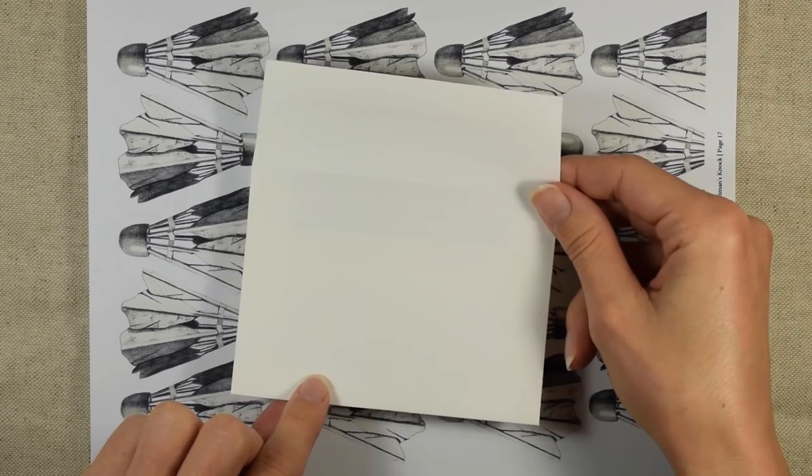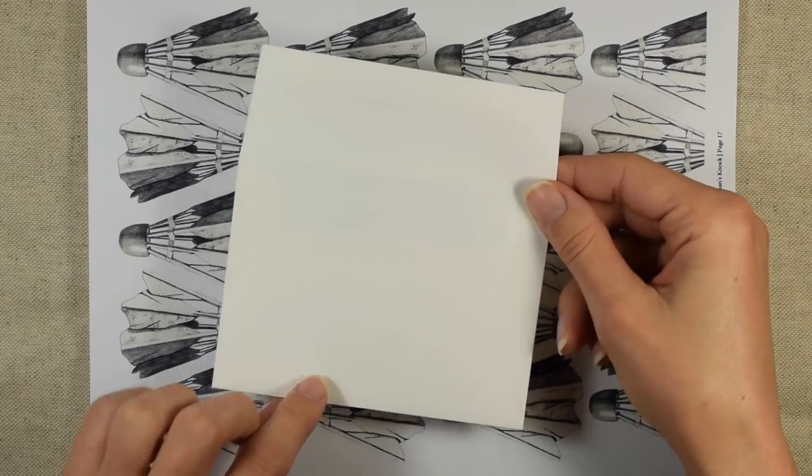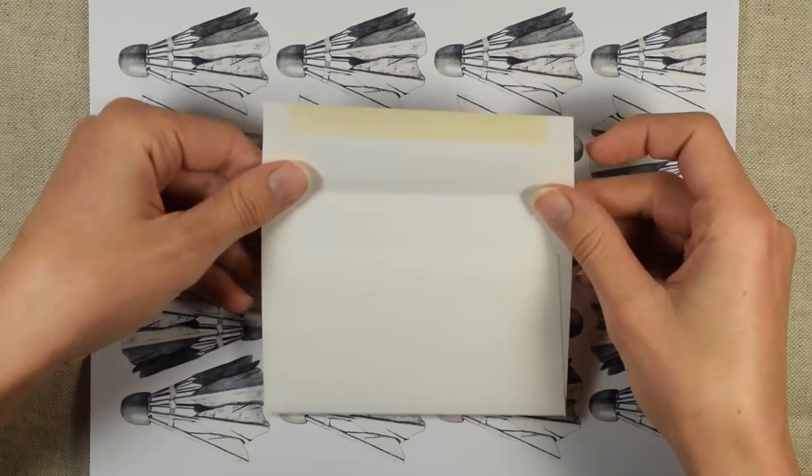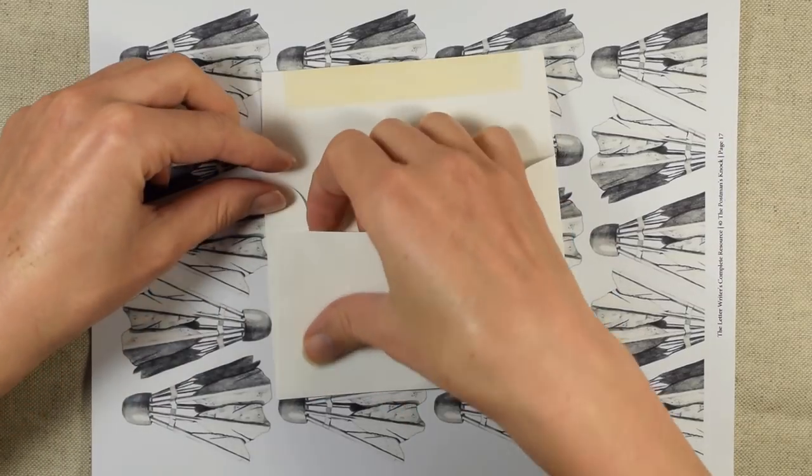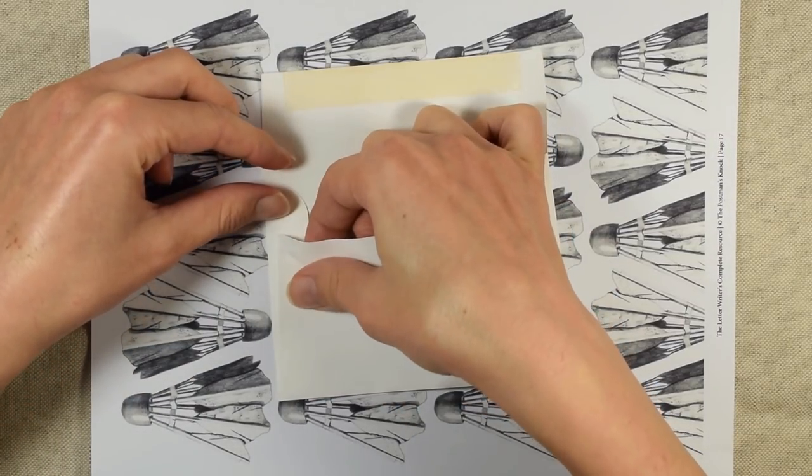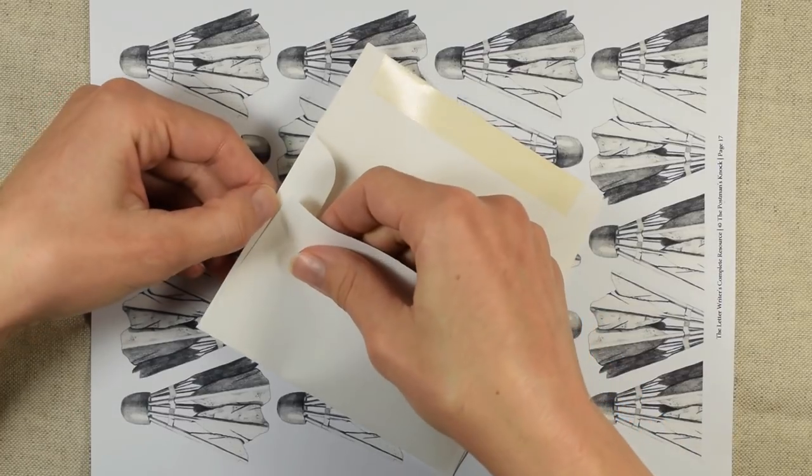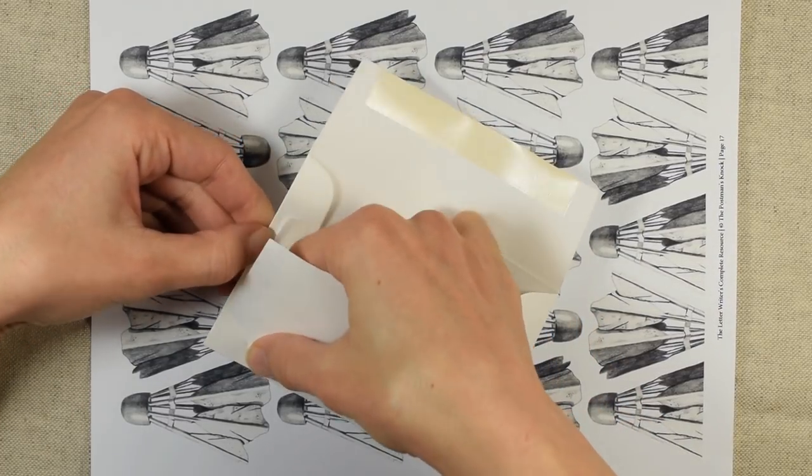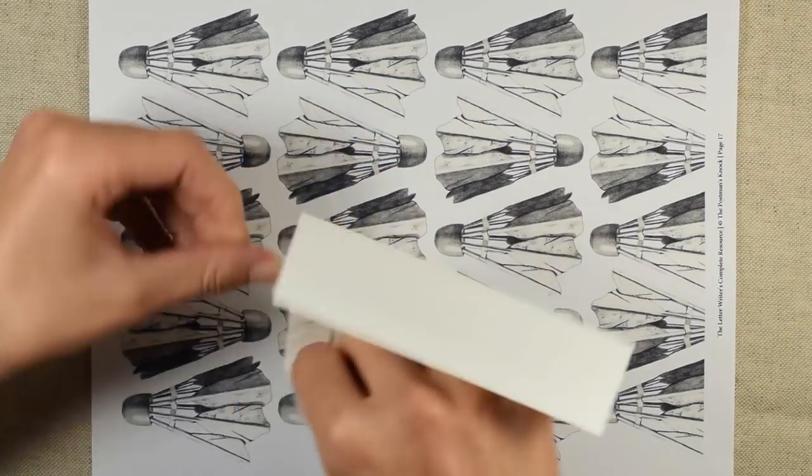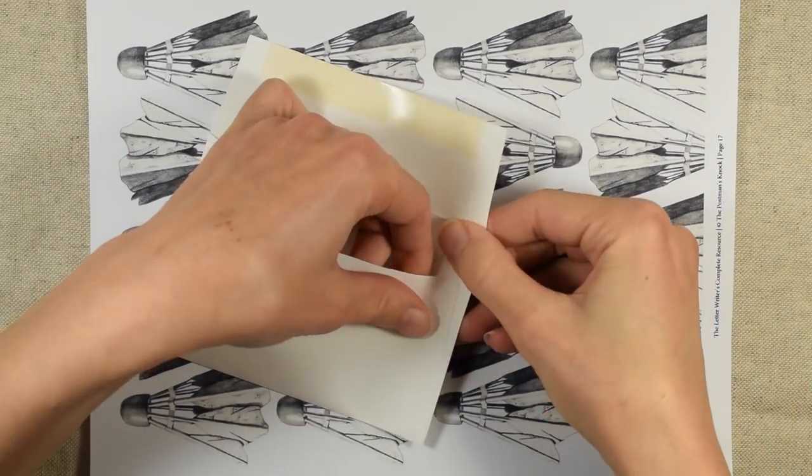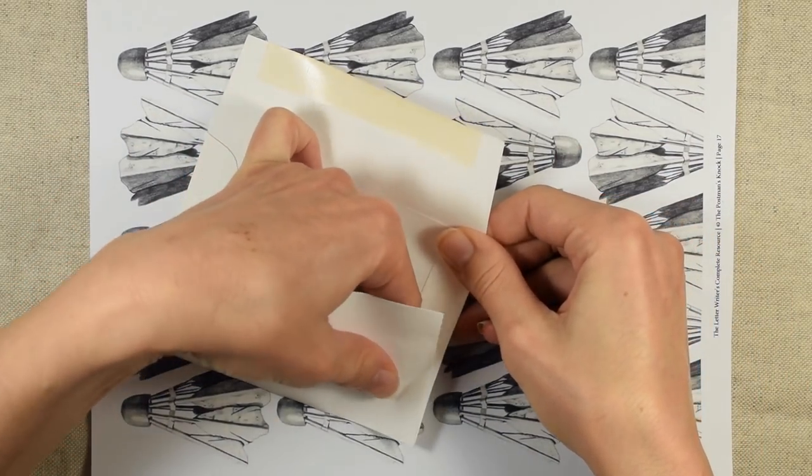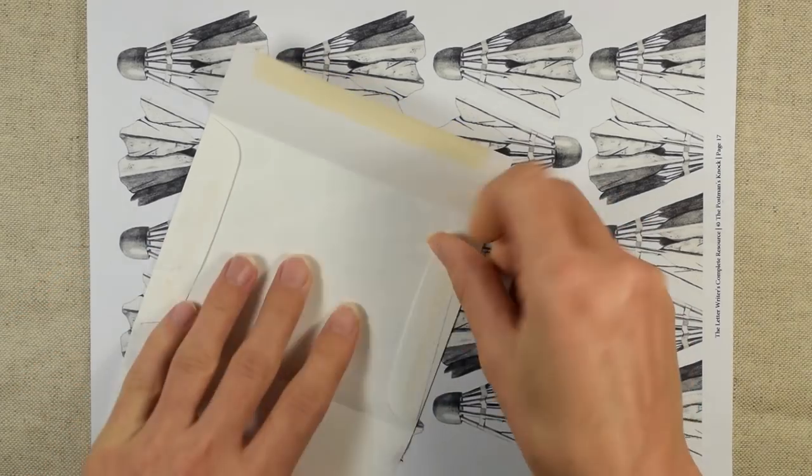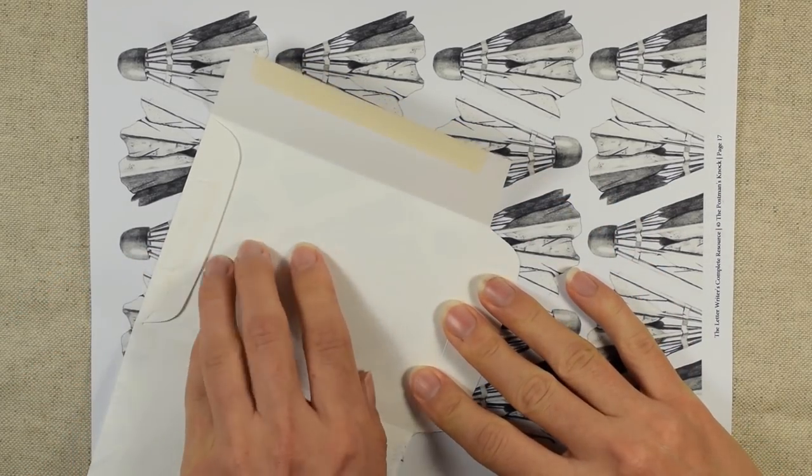You're going to start off with a commercial envelope. So just pick a commercial envelope size that you like. This is a little one, like I said, and then just gently pry apart the envelope at the seams. And you should be able to unfold it like this.